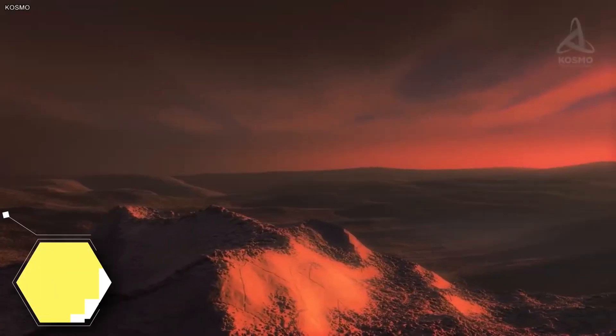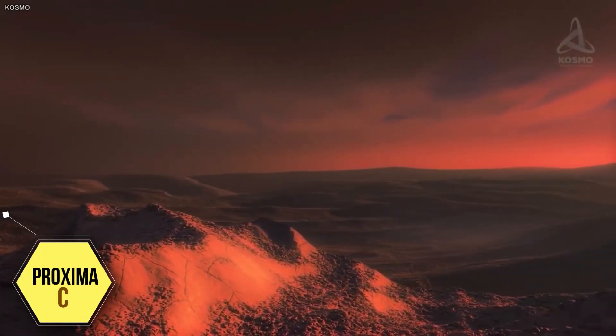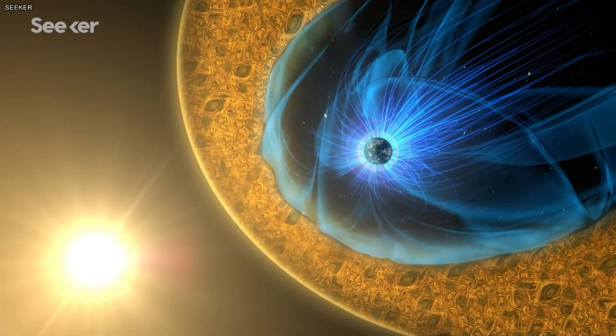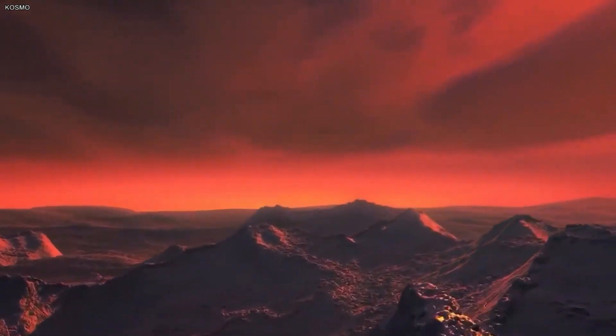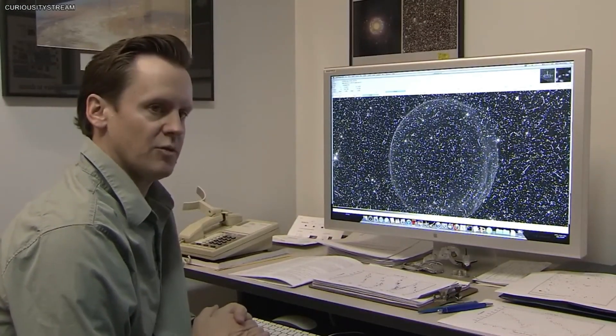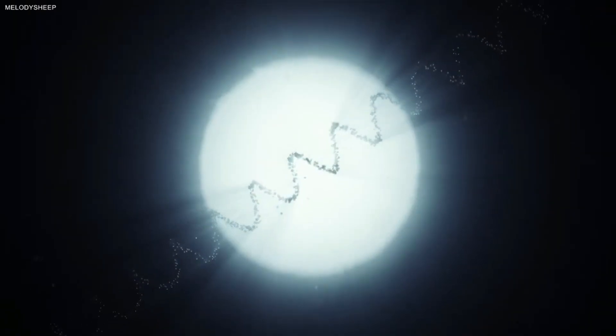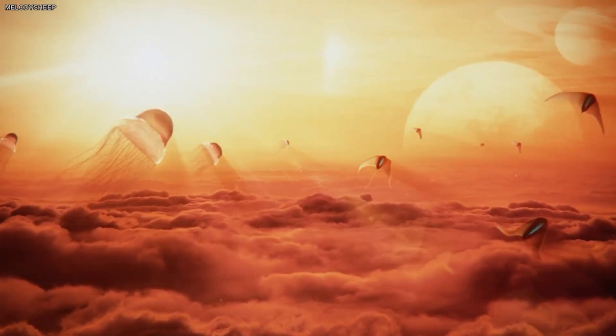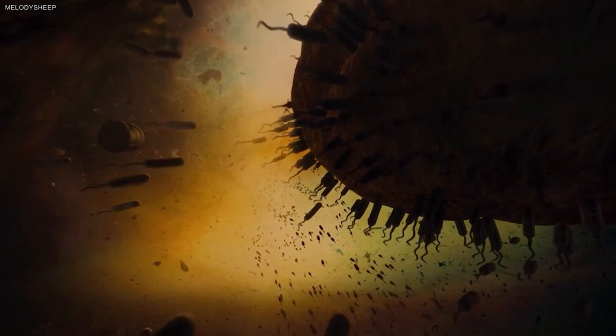Meanwhile, another exoplanet, Proxima Centauri c, is what is known as a super-Earth or mini-Neptune planet, was also discovered later on. That's about seven times as massive as Earth. It orbits around its star once every 5.2 years. So, due to the star's dimness and the planet's long orbital period, it is unlikely that Proxima Centauri c is habitable.